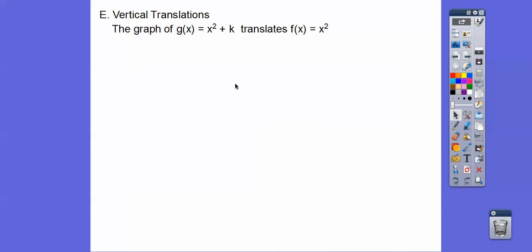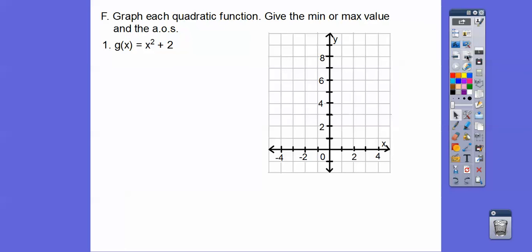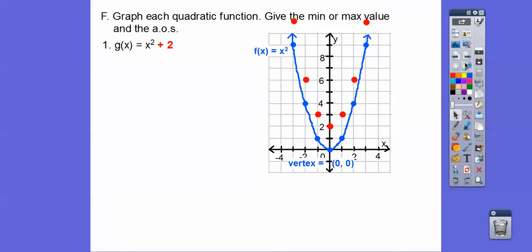Vertical translations occur when we take f(x) = x² and add or subtract a constant k. We translate f(x) into g(x) by adding a constant — the graph moves up if k is positive and down if k is negative. For example, g(x) = x² + 2 means all points shift up 2. The vertex moves up 2, and when we connect the points, there's the parabola g(x) = x² + 2.